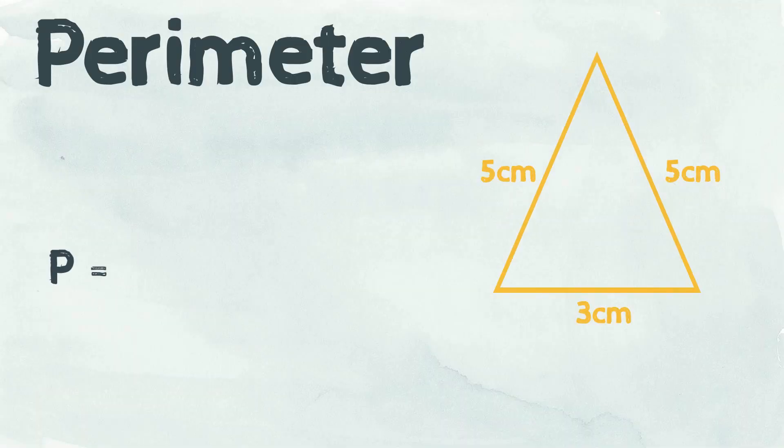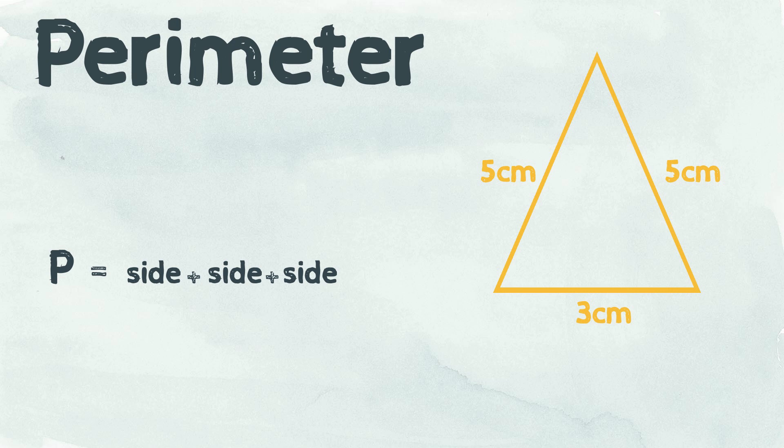Add together the length of each side to calculate the perimeter of this triangle. 3 centimeters plus 5 centimeters plus 5 centimeters equals 13 centimeters.